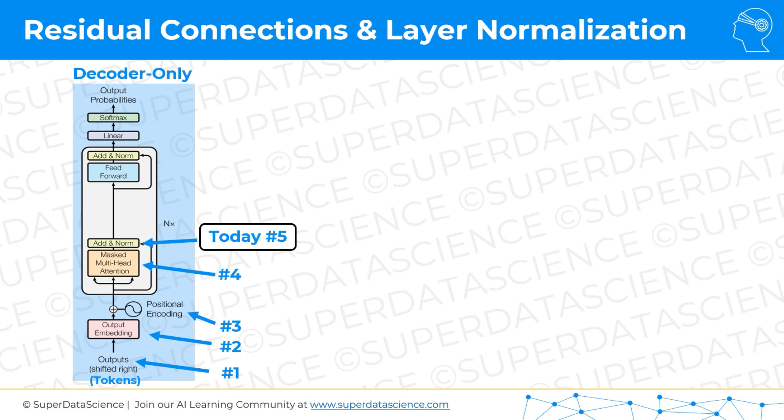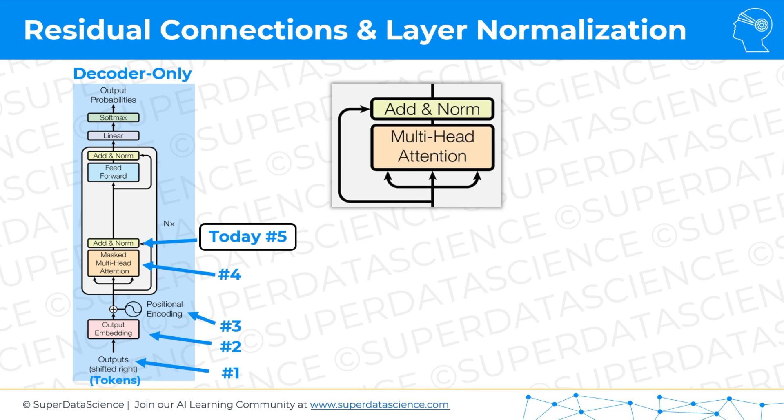Now first about residual connections. If we zoom in, we've got that part of the diagram and the residual connection is this arrow over here in red. Basically what we're doing is, in addition to the output of the multi-head attention — those context-aware vectors that we get as an output — we're going to combine them with the vectors we had before the multi-head attention. And that gives us a few benefits.